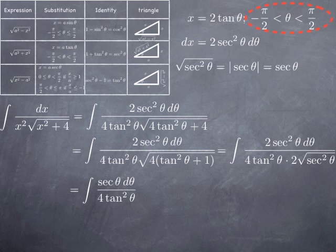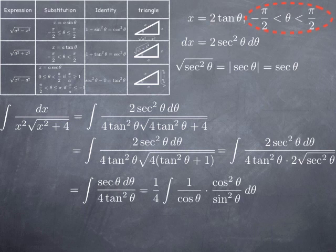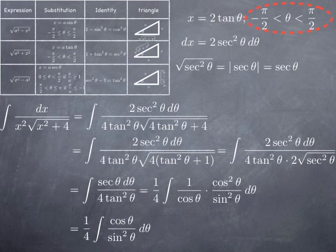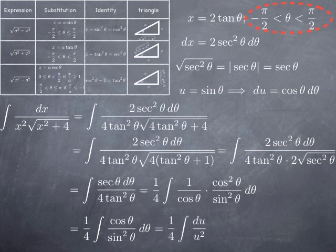Rewriting in terms of sine and cosine: secant is 1 over cosine, tangent is sine over cosine, so 1 over tangent squared is cosine squared over sine squared. One of the cosines cancels, giving one-fourth times the integral of cosine theta divided by sine squared theta. Now the numerator is the derivative of sine and the denominator is a power of sine, so with the substitution u equals sine theta, du equals cosine theta d theta, the integral becomes one-fourth times the integral of du over u squared, which is u to the negative 2. Integrating gives u to the negative 1 over negative 1, so negative 1 over 4u plus a constant.